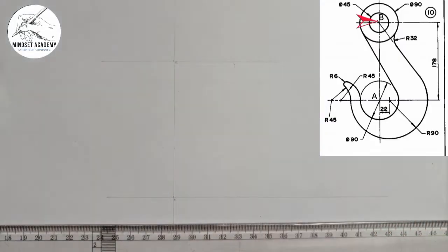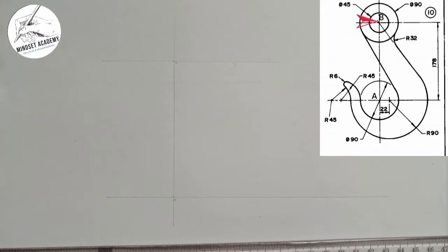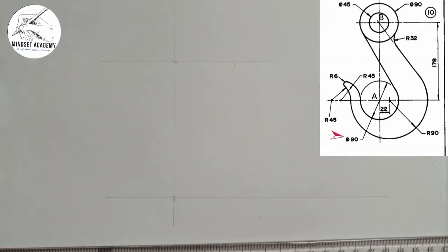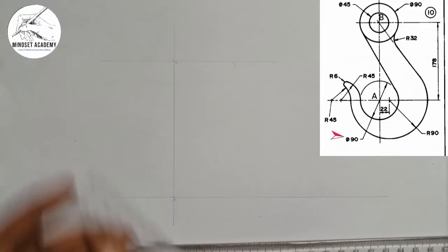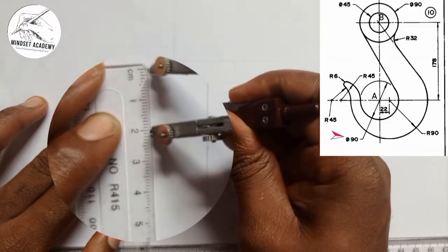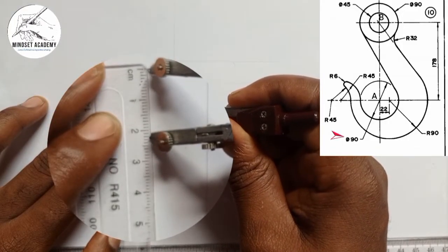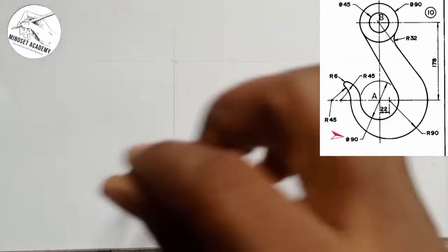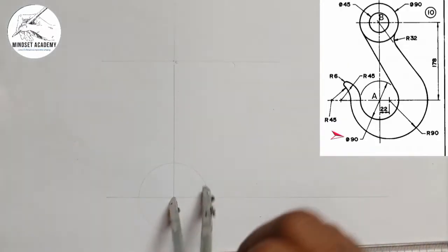I'll move my T-square to that point and draw another horizontal line. So this is the first point and that is the second point. Now if you look at this figure, the diameter of this curve here is given to be 90 — so that's diameter 90, which means radius 45. But since we're using half the dimension, that gives us 22.5. I'll take my metal rule and measure 22.5, then place it at the center and draw a faint circle.